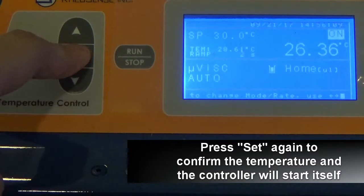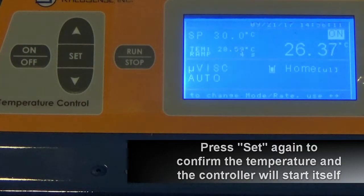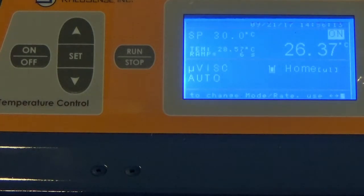The machine will heat up the samples until it reaches the desired 30 degrees. Only then can you press start to run the measurement. This is basically the temperature control accessory for the microVISC from RealSense. Thank you.